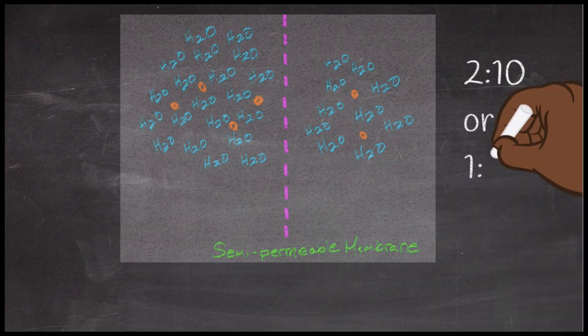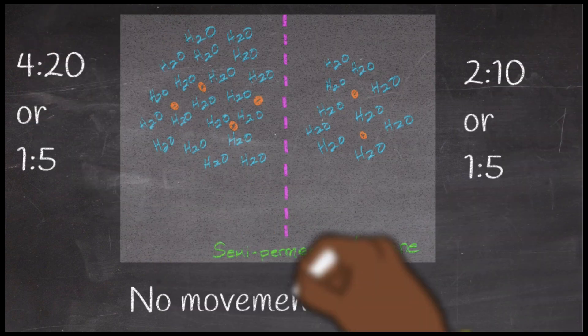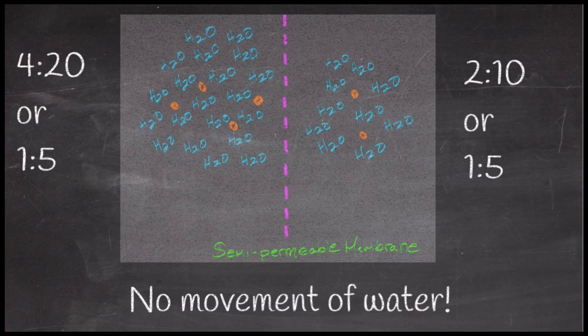In this final depiction, we have the ratio of 4 to 20 versus 2 to 10, which is the exact same ratio. One thing I also want to highlight is that we do not have the same amount of solutes on each side — there are 4 solutes on the left and 2 solutes on the right — but it is the same ratio: 2 to 10 versus 4 to 20.